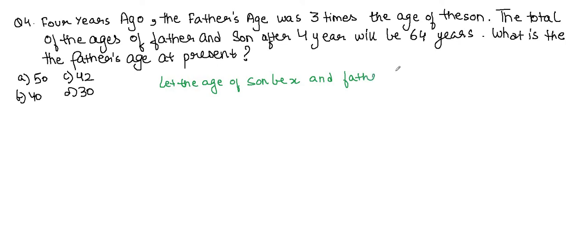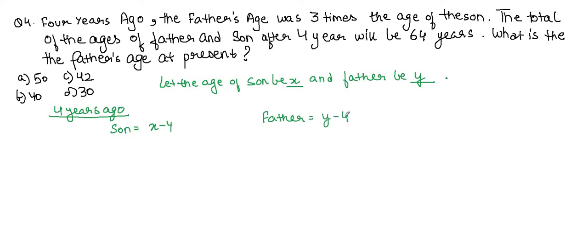Four years ago: son's age = x − 4, father's age = y − 4. It is given that father's age was 3 times the son's age: y − 4 = 3(x − 4). Solving this equation gives: 3x − y = 8. This is equation number 1.